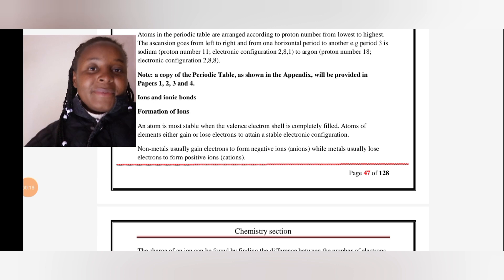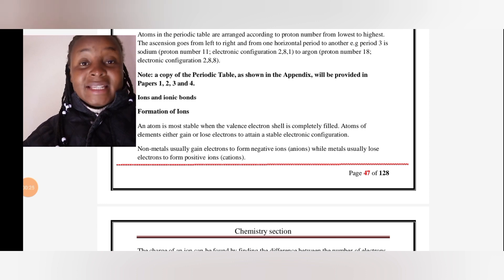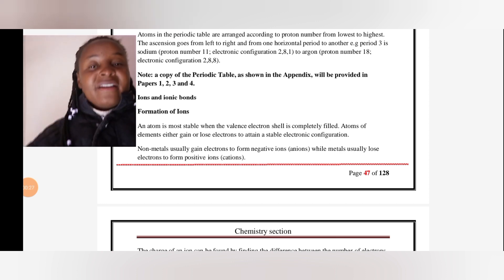How do ions form? An atom is more stable when the valence electron shell is completely filled. Every atom of an element fights to have a complete outer shell. If it's in period one, it would prefer to be filled with two electrons, then others eight, eight, eighteen, and so forth.